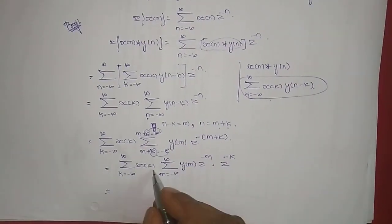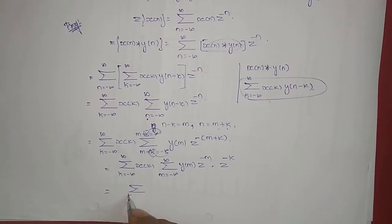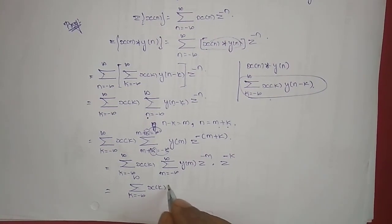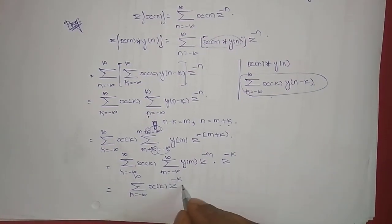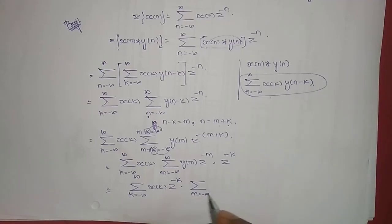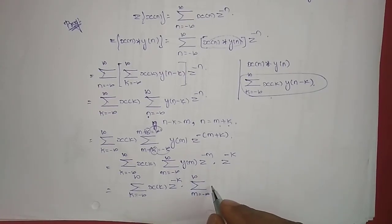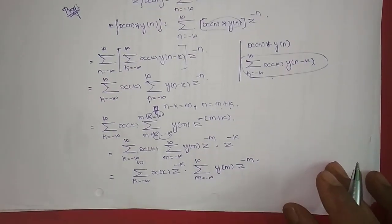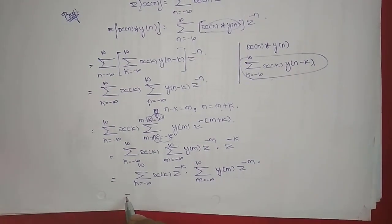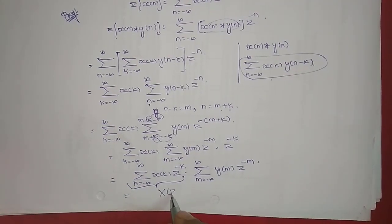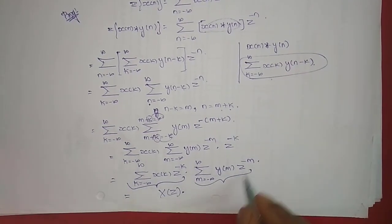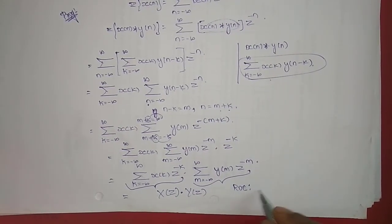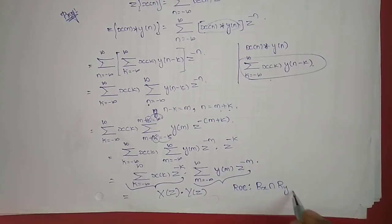So this becomes summation k from minus infinity to plus infinity of x of k times z power minus k, multiplied by summation m from minus infinity to infinity of y of m times z power minus m. From the definition of Z-transform, the first part is X of z and the second part is Y of z. The ROC does not change, it remains Rx intersection with Ry.